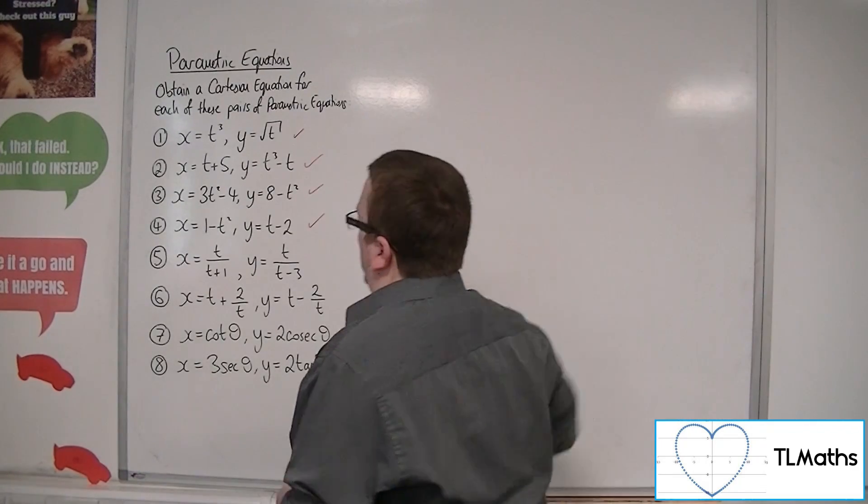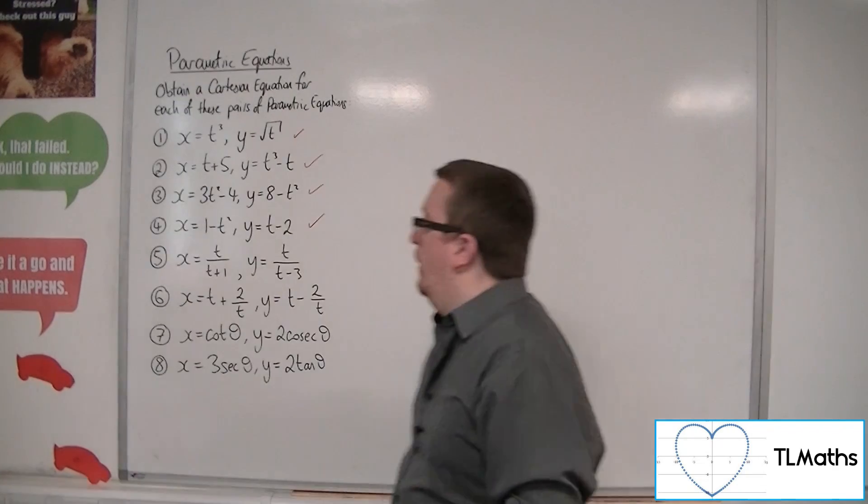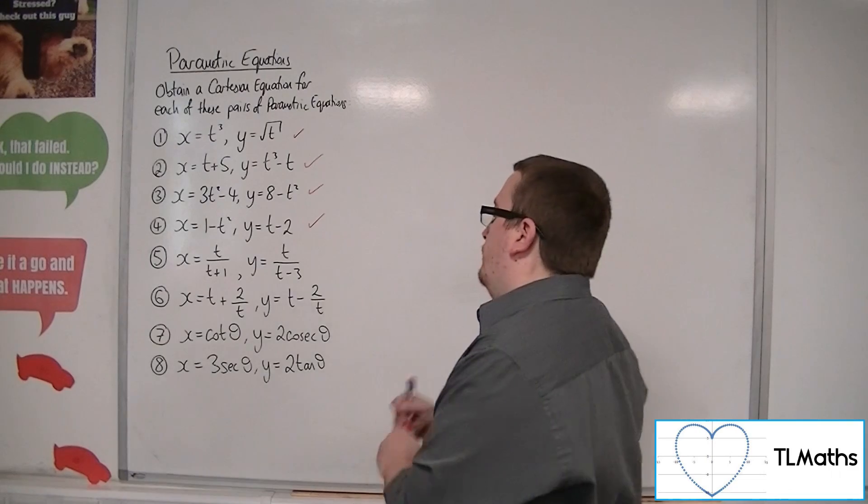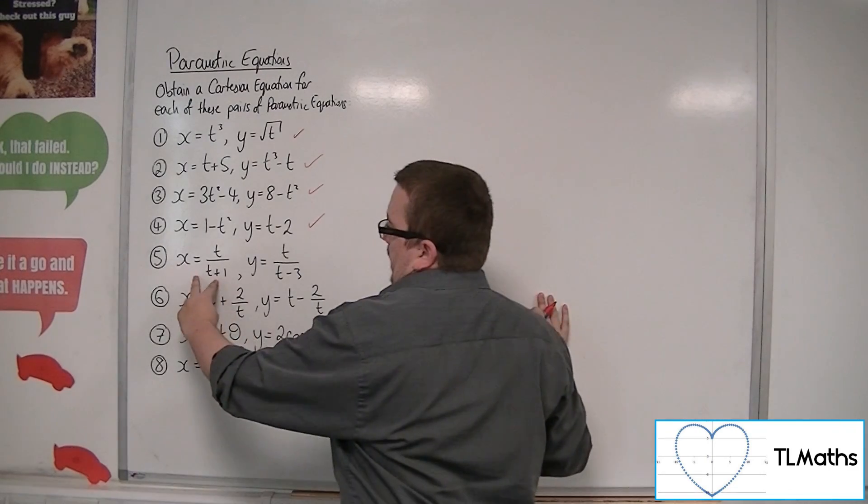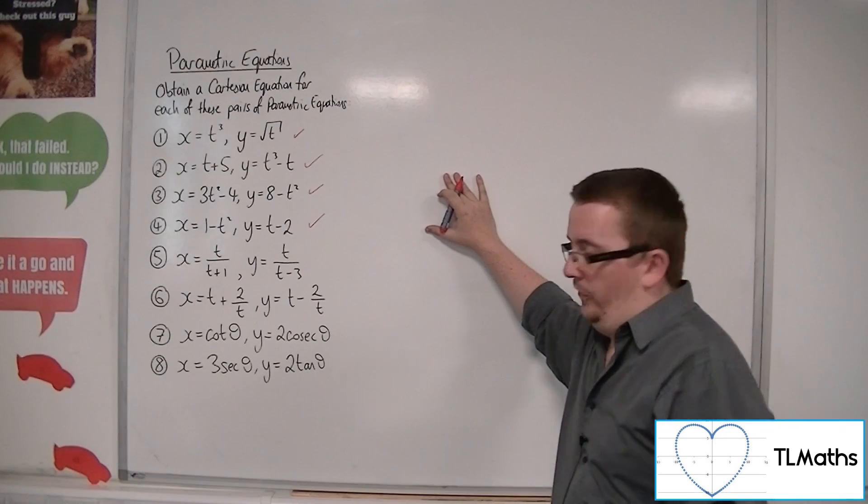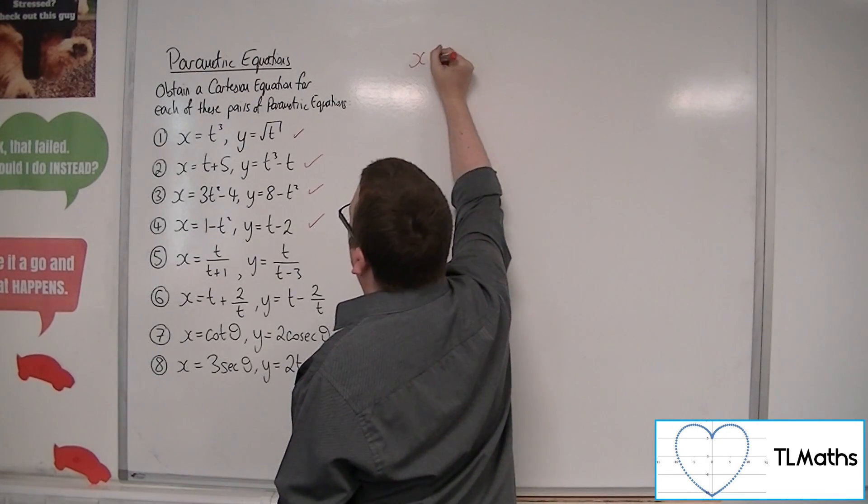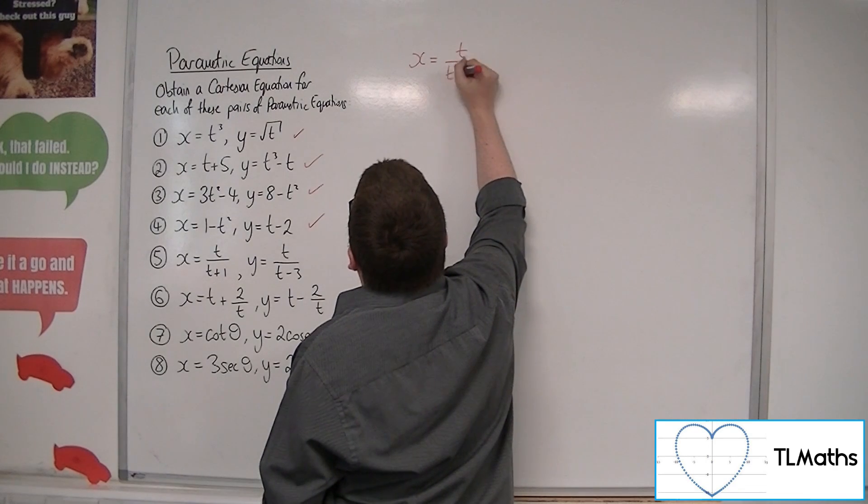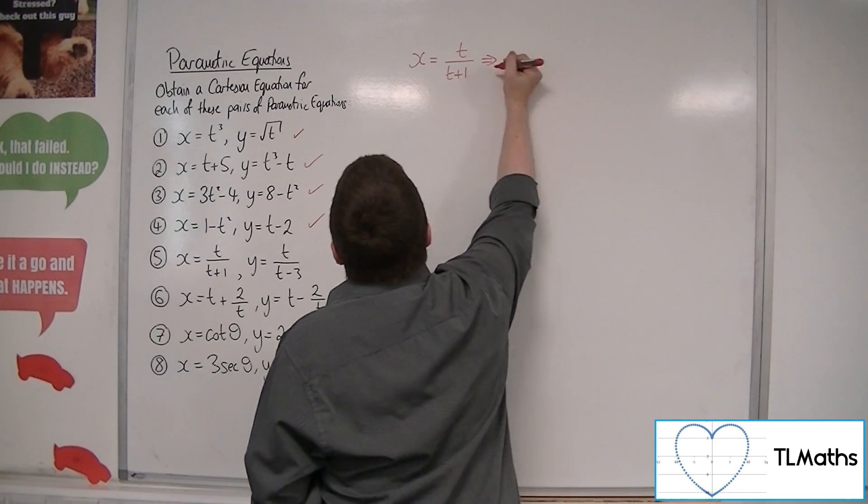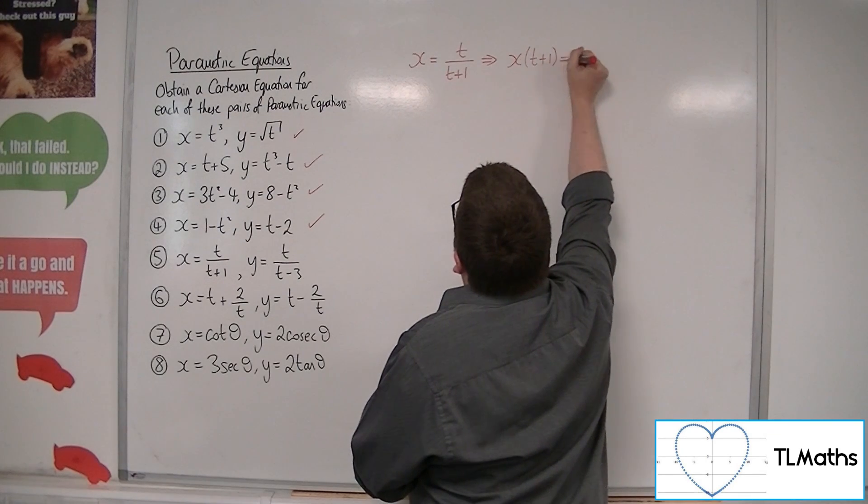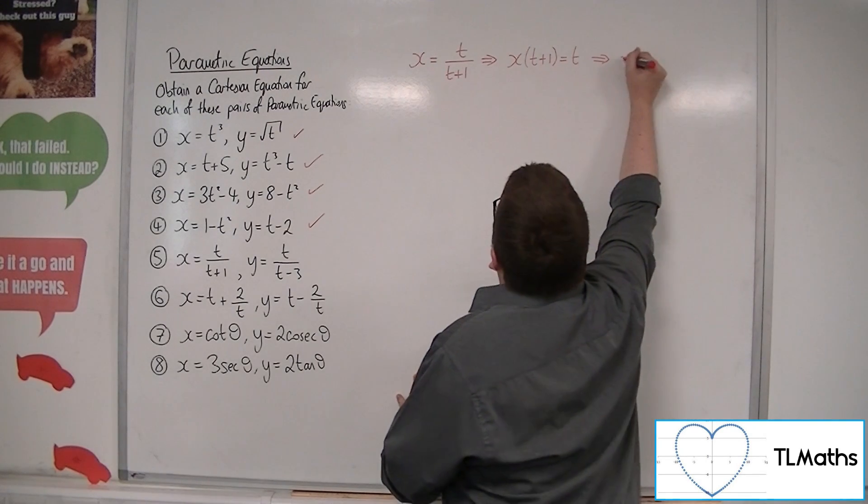Now, sometimes, as with number 5, the algebra can get a little bit intensive. Okay. So looking at either of these, neither of those look easier than the other. So probably best to just choose one and see where we go with it. So I'm going to multiply both sides by the t plus 1.